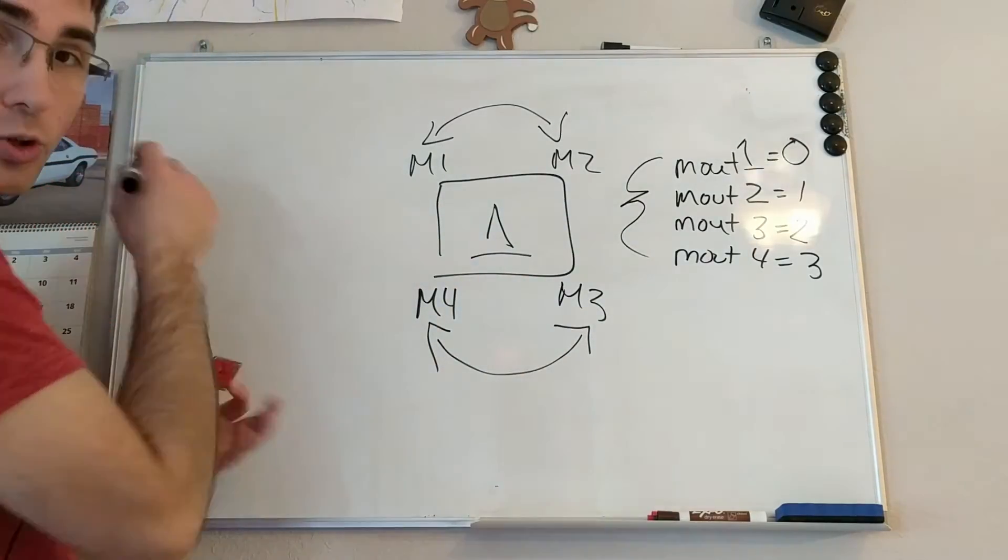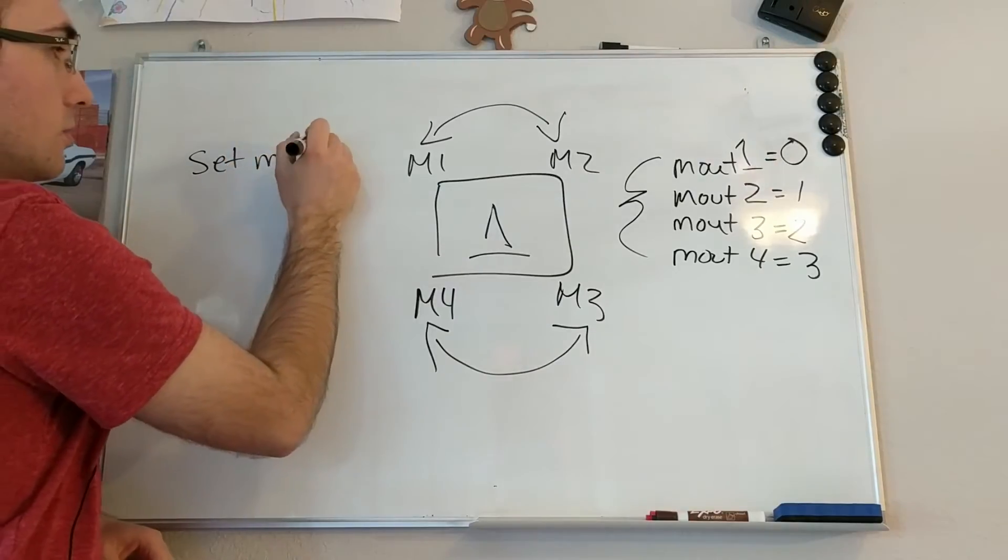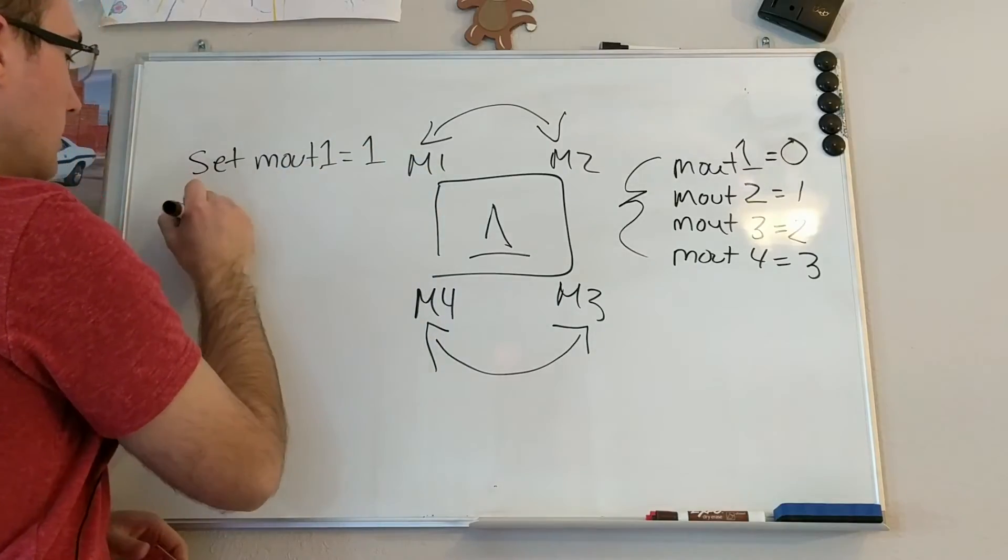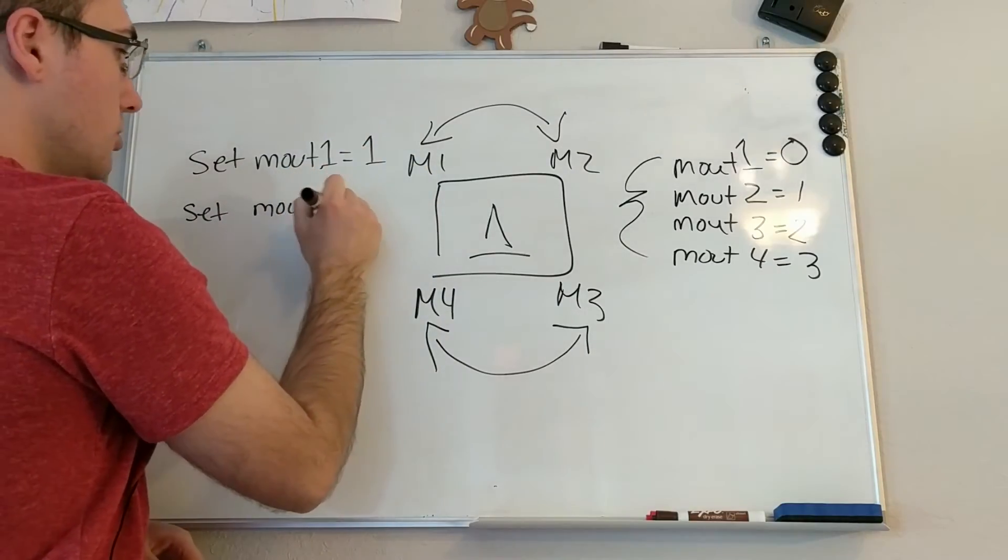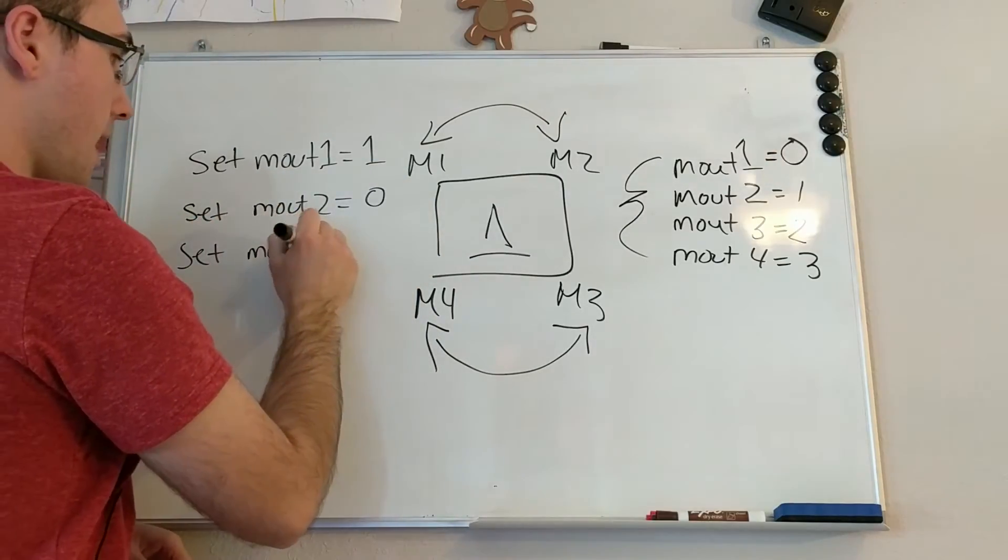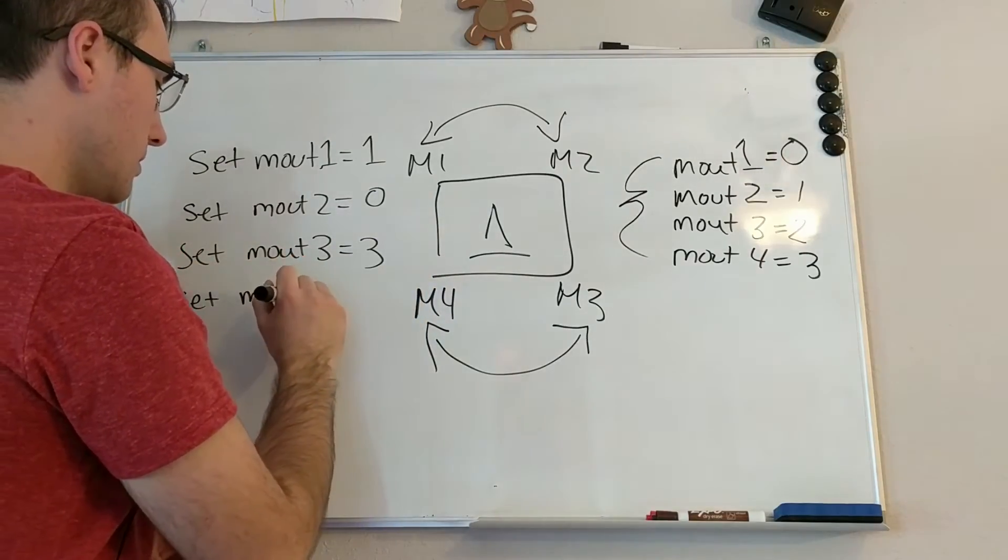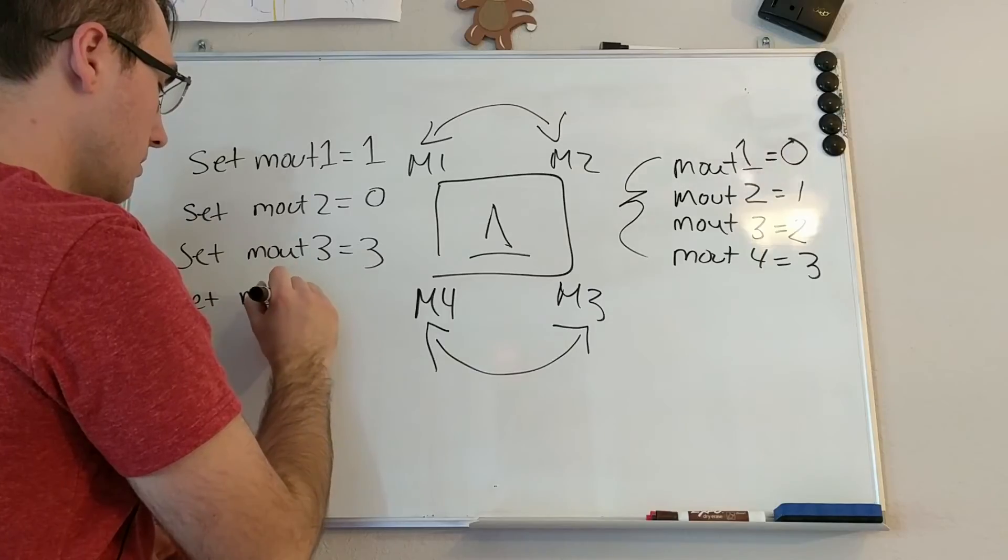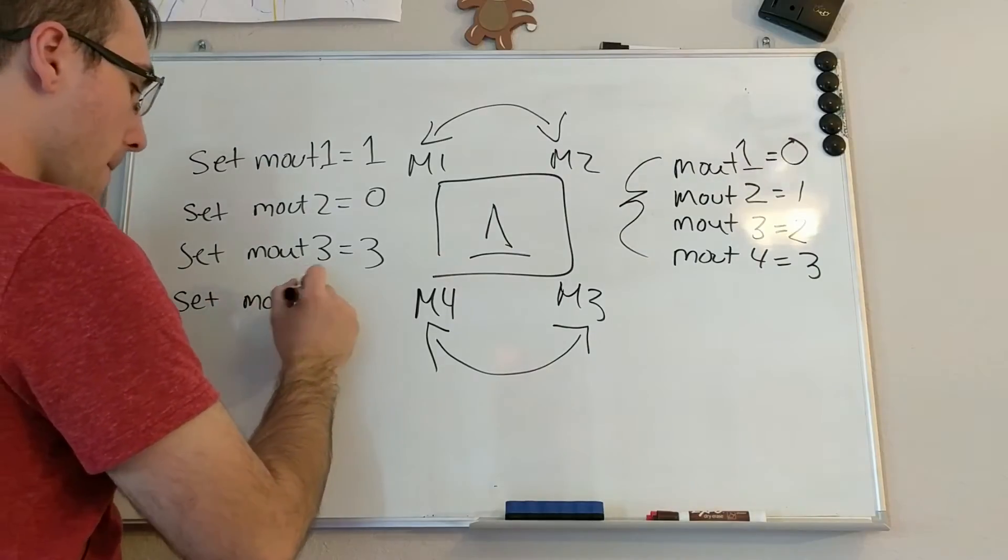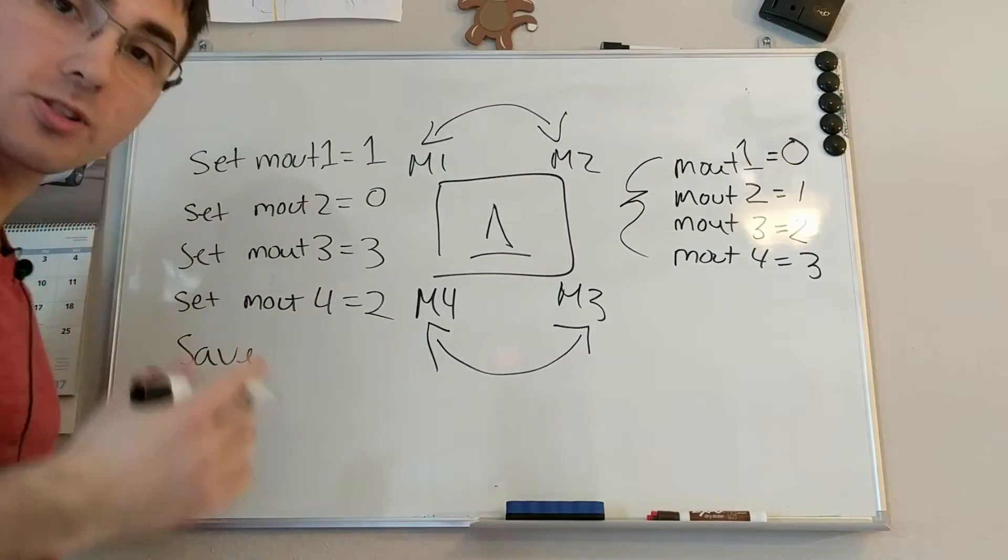So that gives you what you'll write in the console is set mout 1 equals 1, set mout 2 equals 0, set mout 3 equals 3, and set mout 4 equals 2, and then you'll type save. And this will save it in the console.